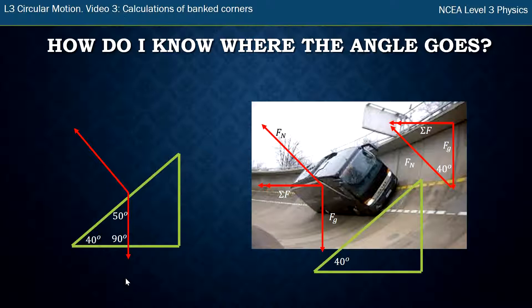If I extend my normal force out, just extend it right out there, then the angle between my yellow line, my surface of my road and that dash line is 90. That looks like it's a 90 there, and so I've got 50 on one side, so the other side of that must be 40.